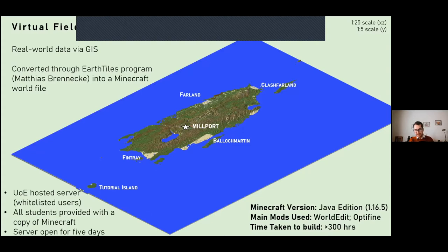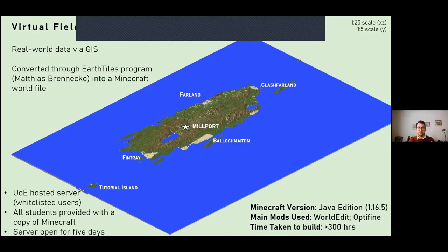I wanted to recreate the actual island, but couldn't get the right scaling. There's a wonderful program called Earth Tiles by Matthias Berenke. It takes real-world data via GIS containing information on the topology of a landscape — trees, urban distribution, and so on — and you can set up a pipeline to convert that data into a Minecraft world file. So whilst I couldn't do Cumbrae, I did use real-world data and edited the island slightly to suit my needs. Bonus points if anyone can work out what island that was — it's roughly the same size as Cyprus as a hint.